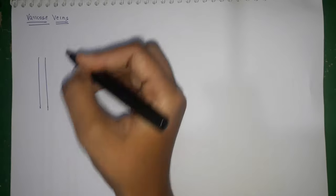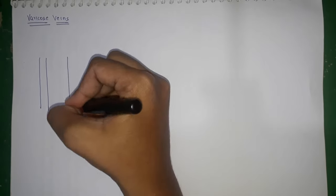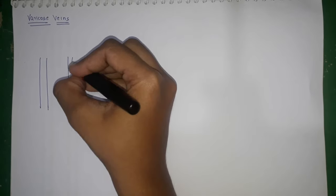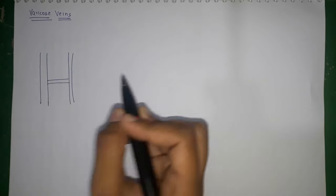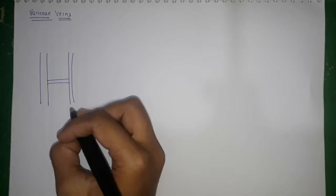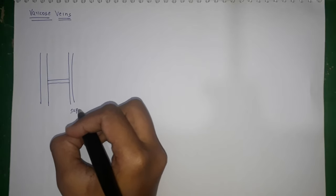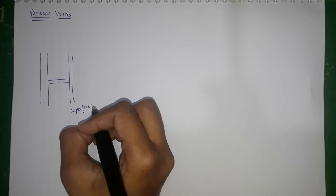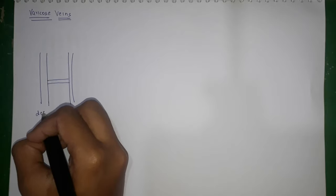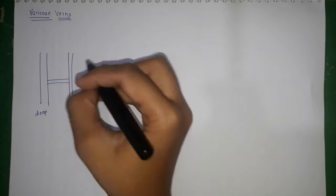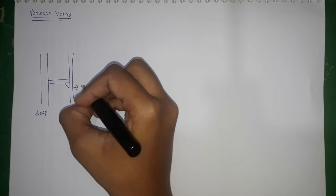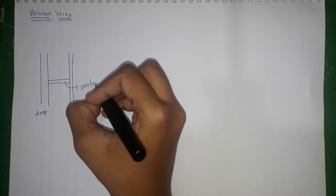There are three sets of veins present in the lower limb. One is called the deep system, one is called the superficial system, and one more is the venous system connecting these two — that is the perforators. The thinner one represents the superficial system, this one is the deep system, and connecting the bridge are the perforators.